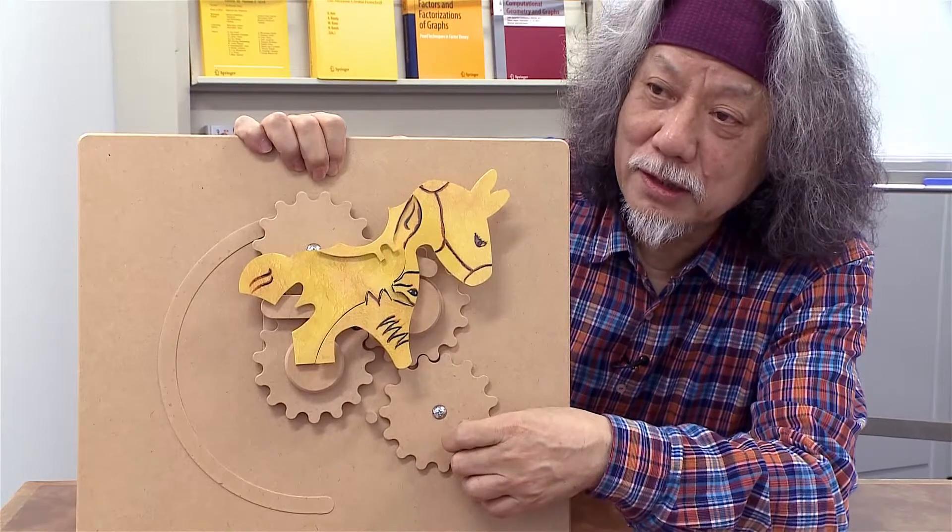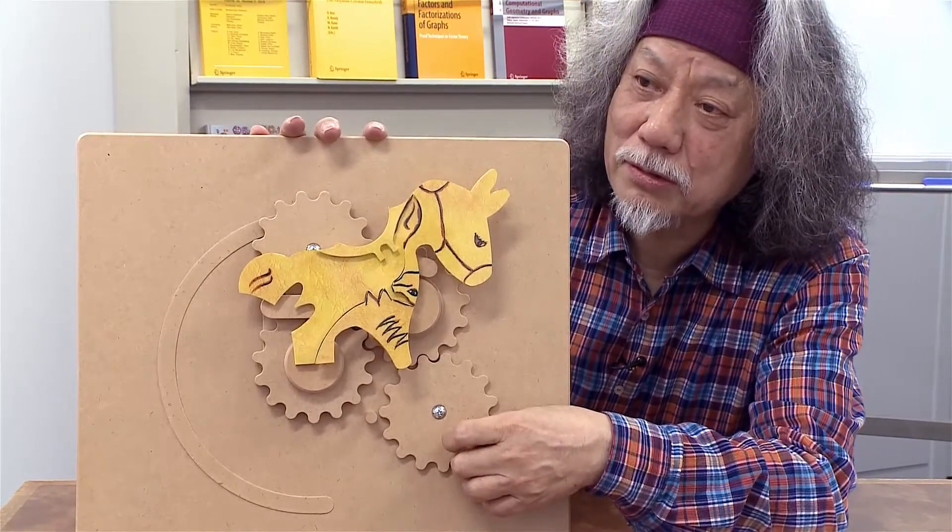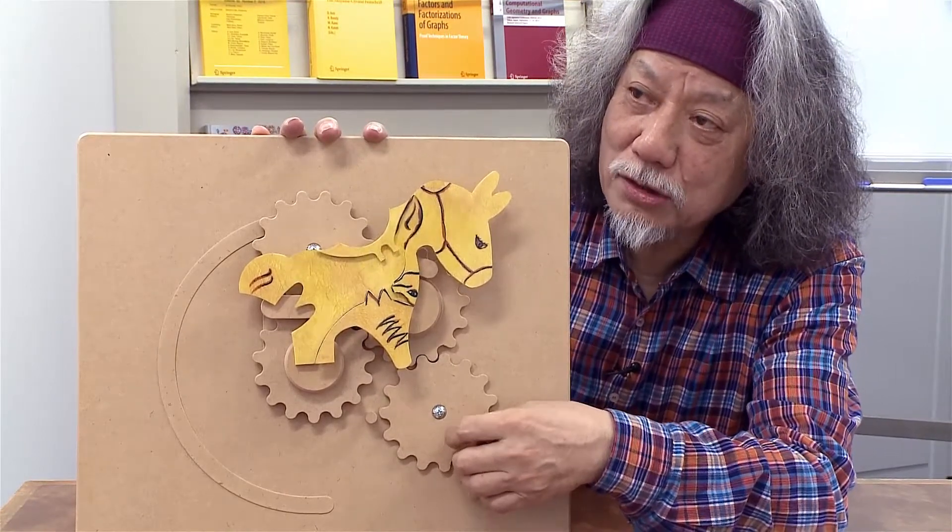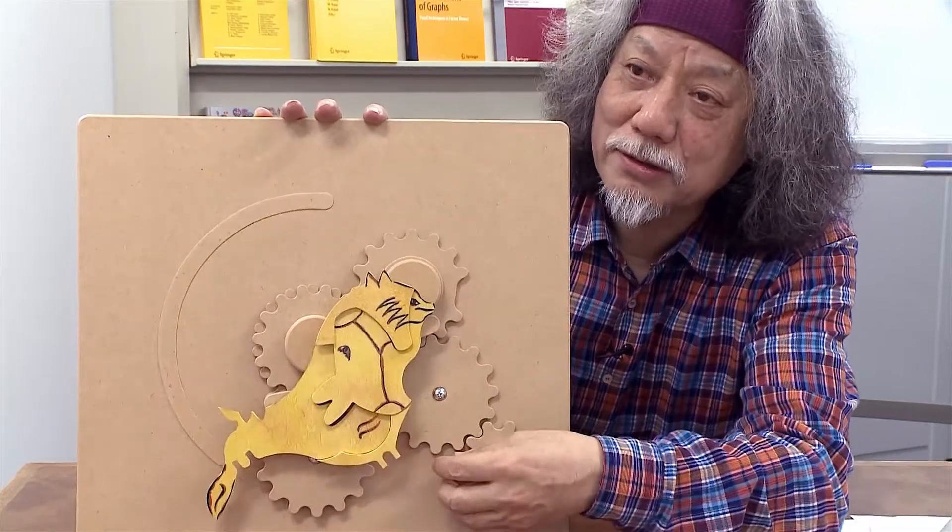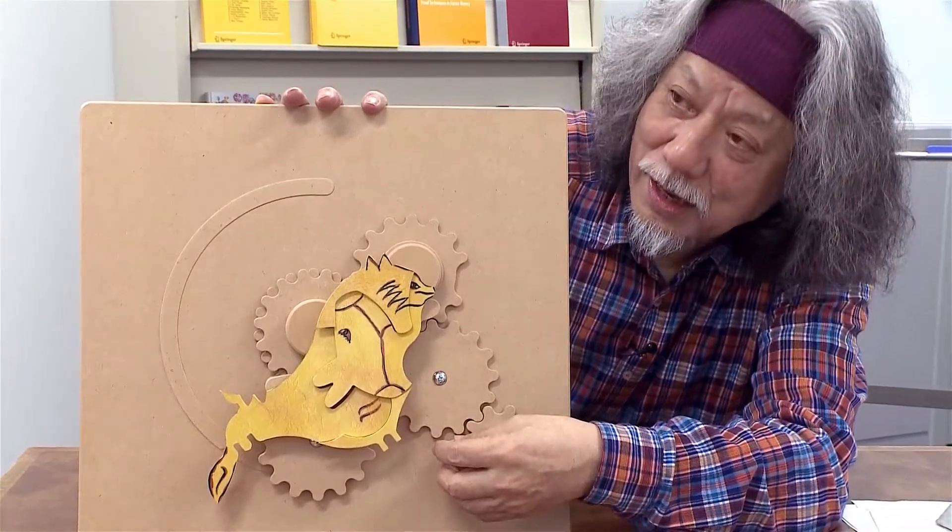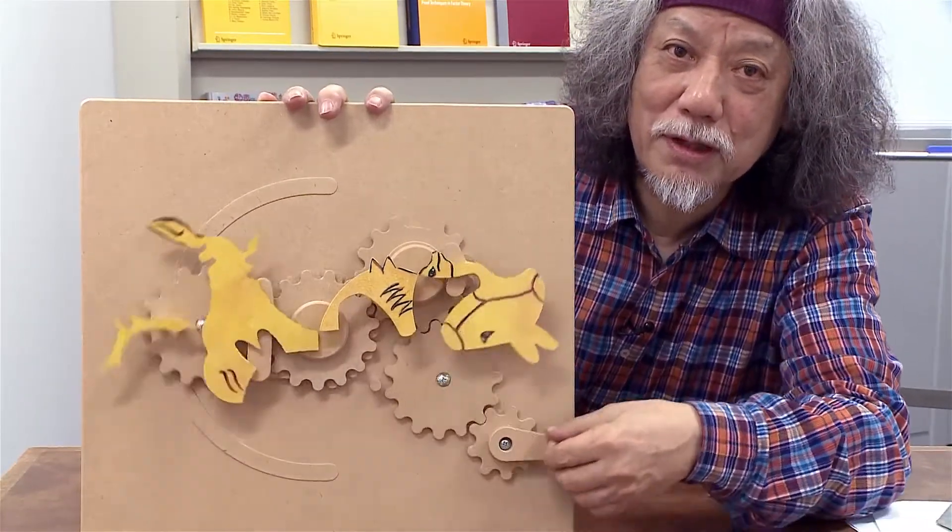Take a close look at how the donkey is disguised as a fox and vice versa. See? It's a donkey and now it's a fox. It's a fox or it's a donkey.